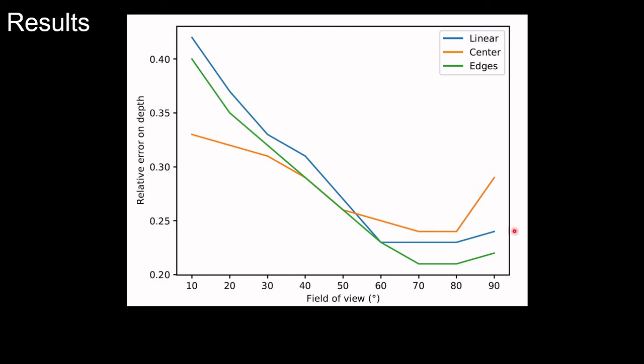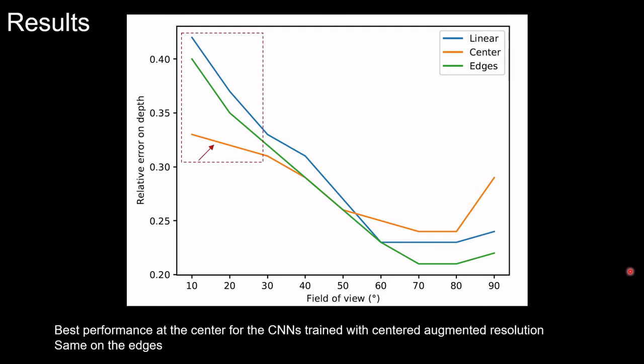As we can observe, all networks perform the best at the edges of the image where the pixel density is the most important. The best results at the center are obtained with the network trained with the center augmented resolution system indicated by the arrow. The same trend is observed on the edges.